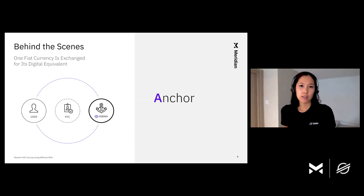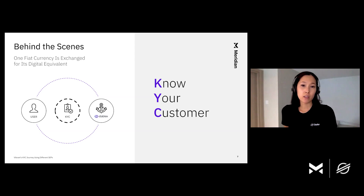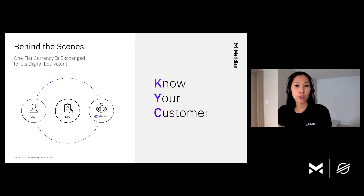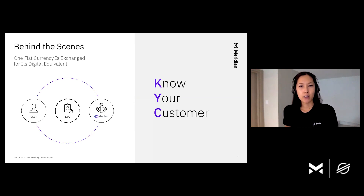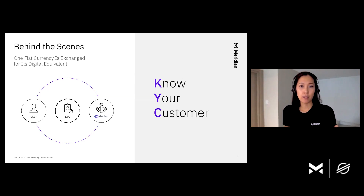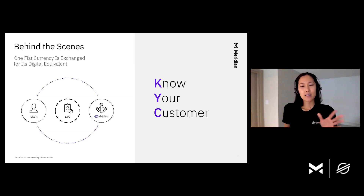Anchors that take deposits need to verify their customers' identity, and this is where KYC comes in. Users are required to go through KYC first before making any deposits or withdrawals on Vibrant. KYC stands for Know Your Customer. It helps prevent identity theft, money laundering, financial fraud, and other financial crimes. Vibrant's current KYC flow is to submit users' KYC information to StableX, the anchor, and the anchor lets us know whether the user's KYC is approved, needs more info, or is rejected. There are apps that allow deposit and withdrawal first and then KYC, but Vibrant does KYC first.